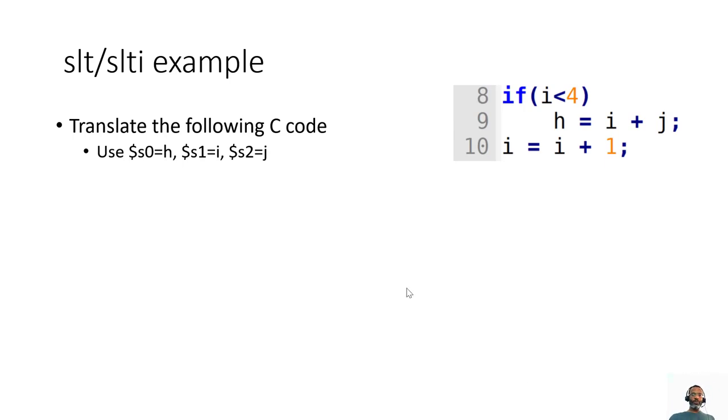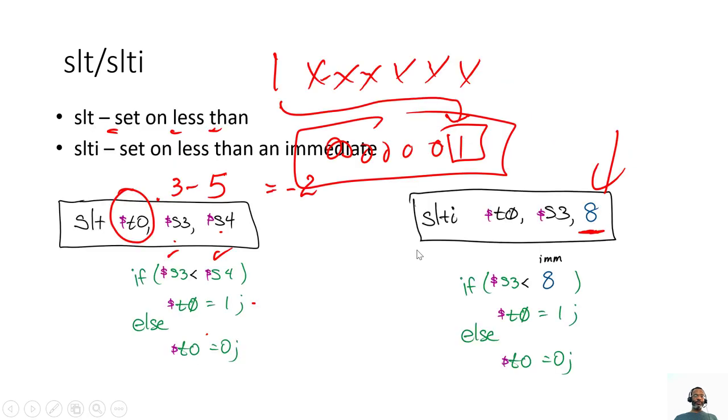Okay, so in the previous clip, we looked at the set on less than and the set on less than immediate and how it works, and how it uses the most significant bit of the subtraction result, the subtraction answer, to determine if t0 gets set to a 0 or a 1. Ultimately, if the first one is less than the second one.